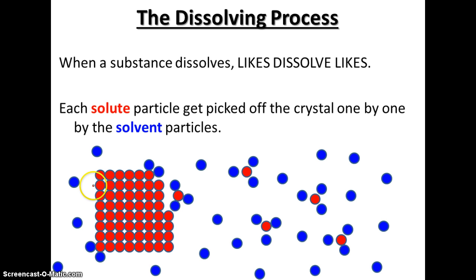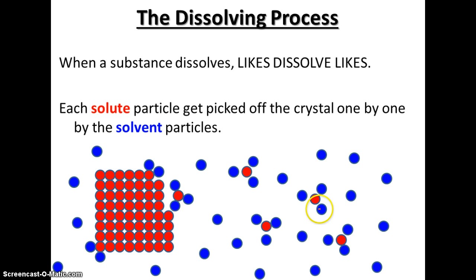If we look at this example, what really happens in the whole process of solvation is these solvent particles — these blue particles — they surround the solute particles, these red ones. They surround them and then pull them off the crystal, eventually forming an aqueous solution. The blue water molecules pull out the red molecules from the crystal, and eventually it gets smaller and smaller, the whole thing dissolves, and we're not able to see the solid anymore.